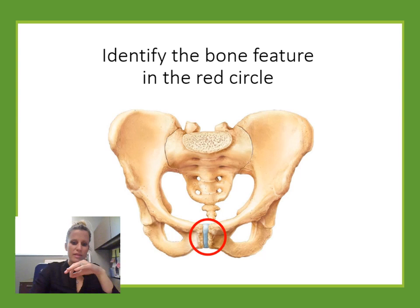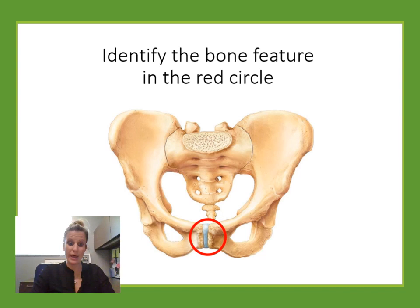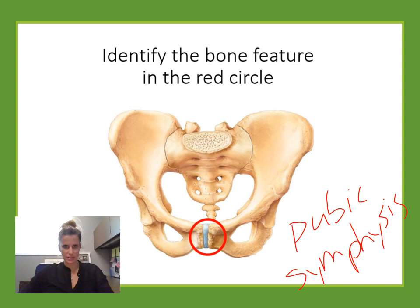Identify the bone feature. We're looking at the front of the pelvis where the two pubic bones come together. There's a pubic bone on each side, and in the middle is a cartilage pad where the two bones meet. This is called the pubic symphysis.